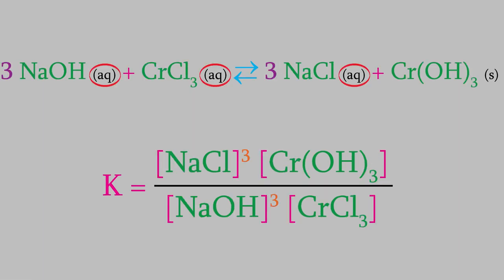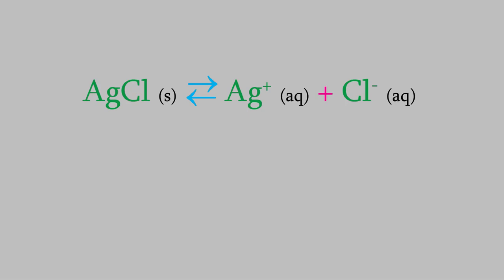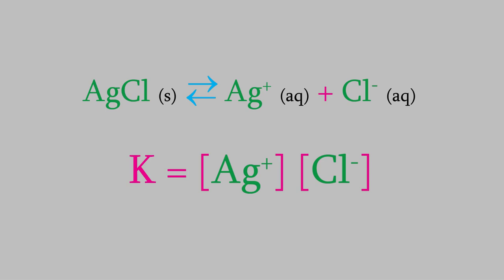Here's another example. This time we have three aqueous solutions and a solid, so we'll leave the chromium-3-hydroxide out of the equilibrium expression and put the other concentrations in the equation. Notice that two of the coefficients are 3, so we need to raise those two concentrations to the third power. Now here's one last example. In this reaction, the silver chloride is a solid, so we'll leave it out of the equilibrium expression. We put the products in the numerator and the reactants in the denominator, but since we're leaving out the reactant because it's a solid, we don't have a denominator in this one.